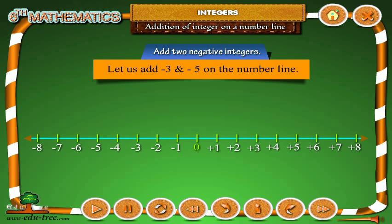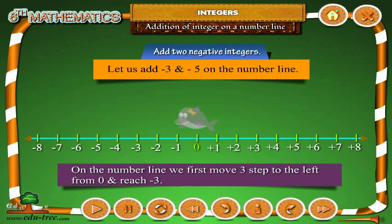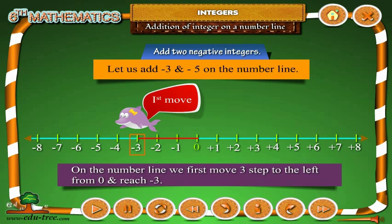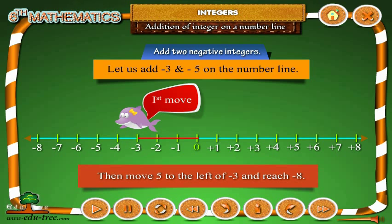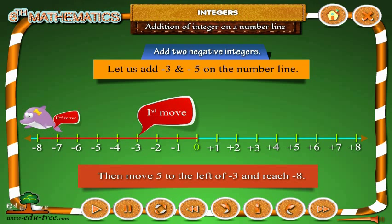Now let us add 2 negative integers. Let us add minus 3 and minus 5 on the number line. We first move 3 steps to the left from 0 and reach minus 3. Then move 5 steps to the left of minus 3 and reach minus 8.